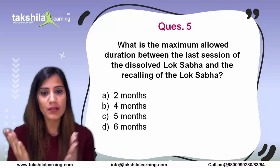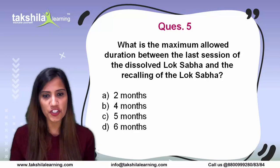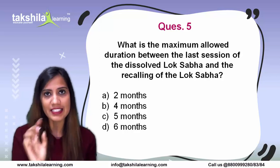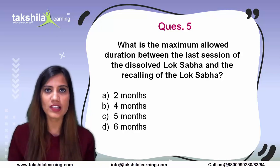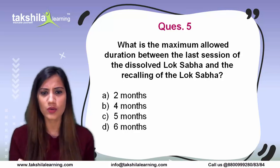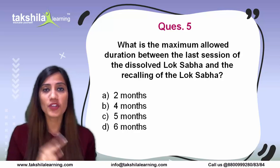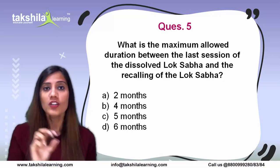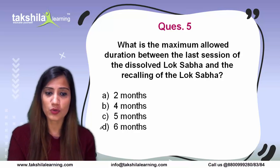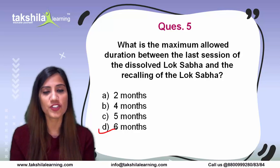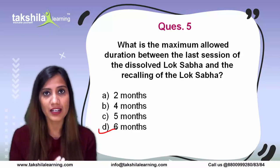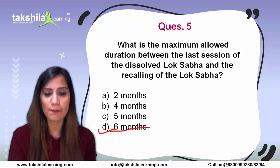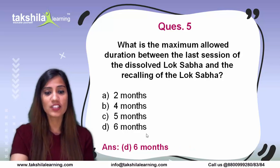Next question: what is the maximum allowed duration between the last session of a dissolved Lok Sabha and the recalling of the new Lok Sabha? If Lok Sabha is dissolved for any reason, within 6 months elections must be held and a new session must start. So the maximum period is 6 months. Question number 5: correct answer is option D, 6 months.